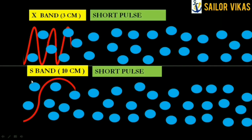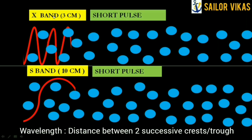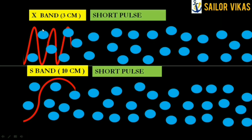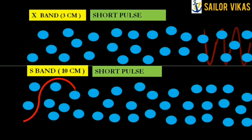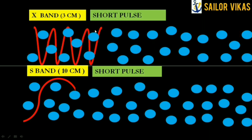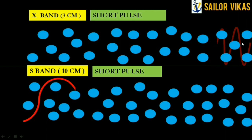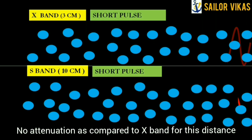Now I will compare X-band and S-band short pulses. For X-band, the wavelength — which is the distance between two successive crests — is 3 centimeters. For S-band it is 10 centimeters. Comparing their travel, the X-band short pulse gets attenuated, but when using S-band there is no attenuation.